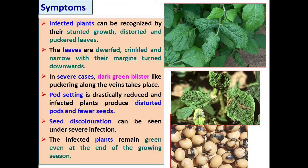Seed discoloration is a common symptom occurring after infection by Soybean Mosaic Virus, and infected plants remain green even at the end of the growing season. This virus is seed-borne and is transmitted by aphids. The favorable conditions for development of this disease are a temperature range of around 18 to 20 degrees Celsius and humid weather.